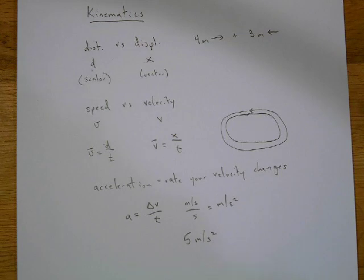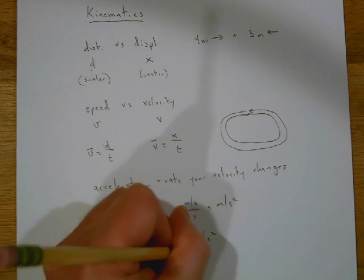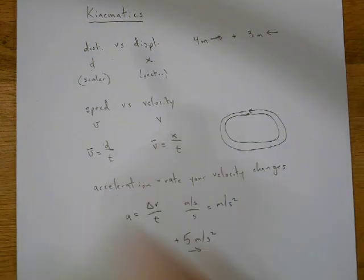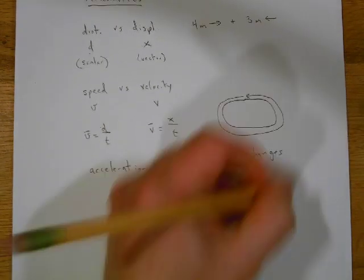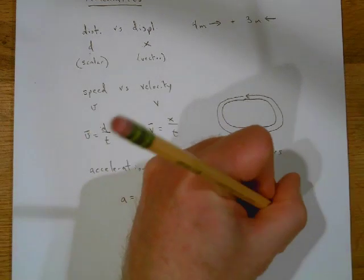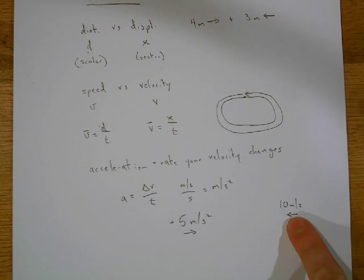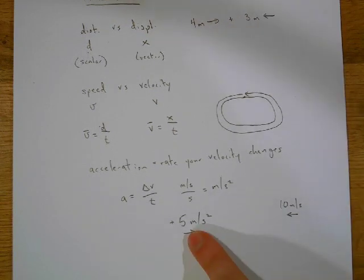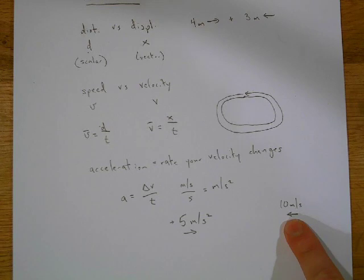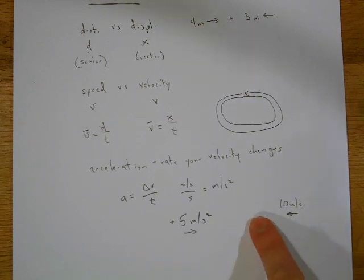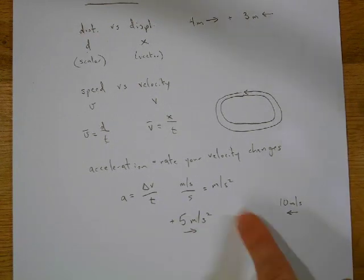So if you were starting at zero, after one second you're going 5 meters per second; after two seconds, you're going 10 meters per second. If you were starting at 10 meters per second in the negative direction, then after one second your velocity changes, so it becomes 5 meters per second more in the positive direction — so after one second you would be going 5 meters per second to the left.